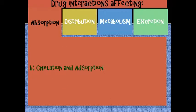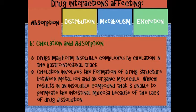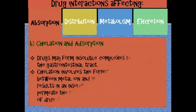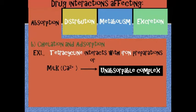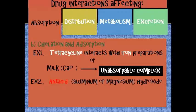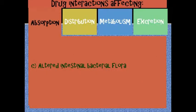Next is chelation absorption. Drugs may form insoluble complexes by chelation in the gastrointestinal tract. Chelation involves the formation of a ring structure between a metal ion — such as aluminum, magnesium, iron, and to a lesser degree calcium — and organic molecules like anti-infective medications, resulting in an insoluble compound unable to permeate the intestinal mucosa due to lack of drug dissolution. For example, tetracycline interacts with iron preparations or milk, resulting in a non-absorbable complex. Another example: antacids such as aluminum or magnesium hydroxide result in a decreased absorption of ciprofloxacin by 85% due to chelation.